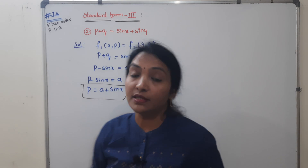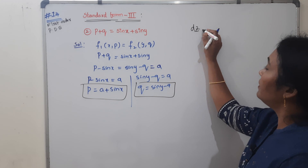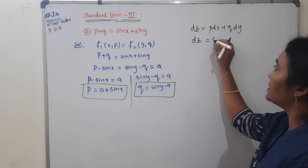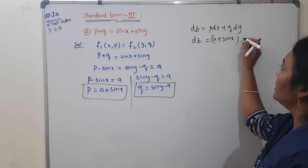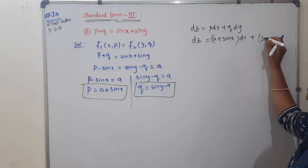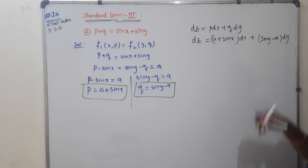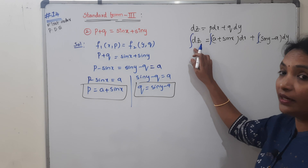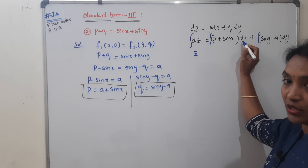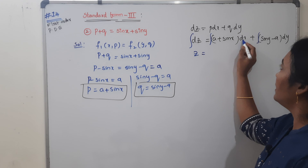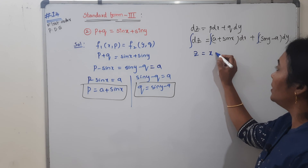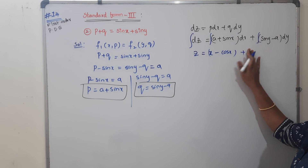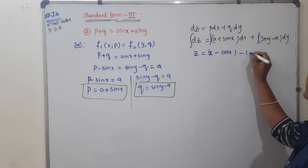Put these values in our standard form: DZ equals P DX plus Q DY. So DZ equals (A plus sin X) DX plus (sin Y minus A) DY. Apply integration on both sides. Integral of DZ is Z. Integrating: AX minus cos X plus and sin Y integrates to minus cos Y.